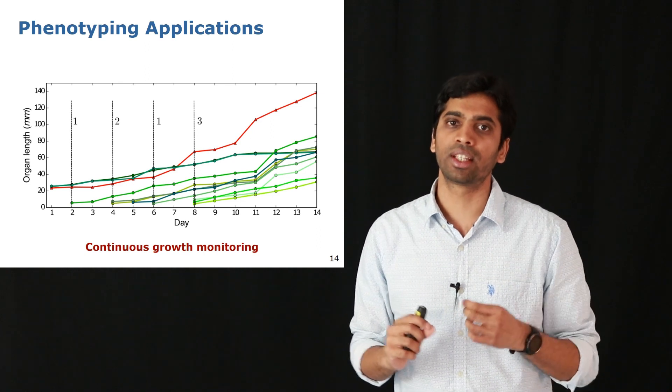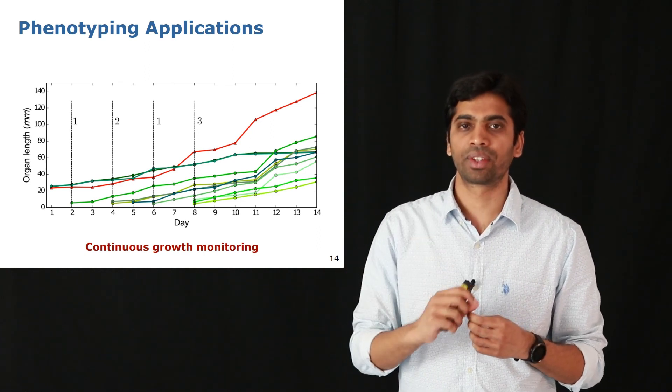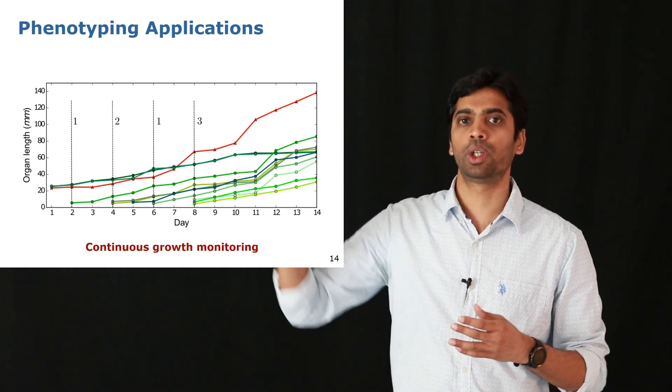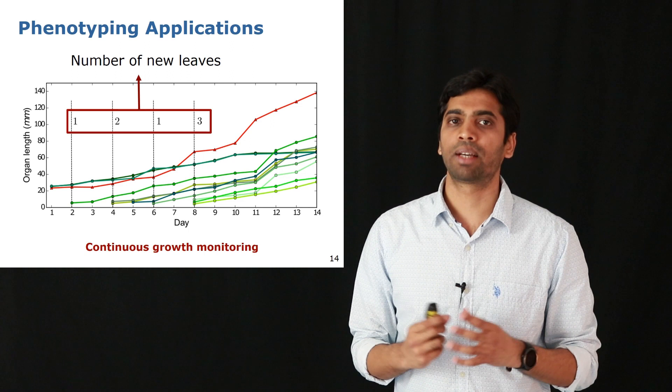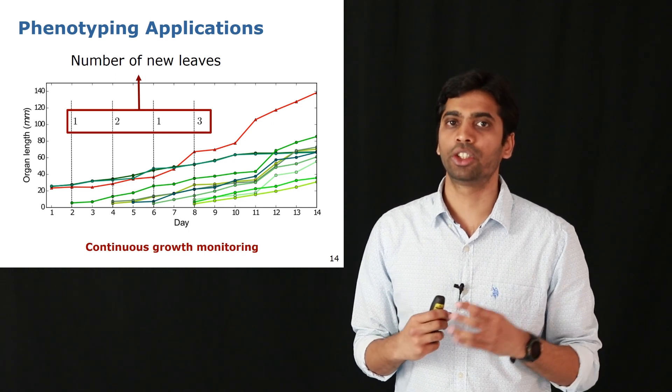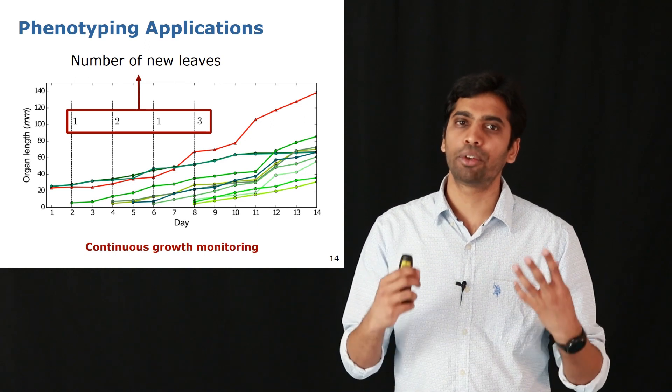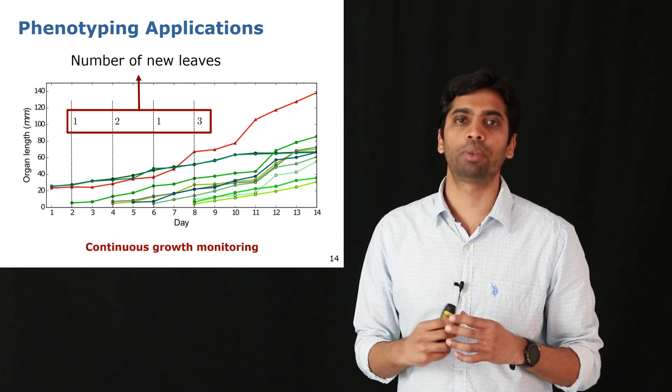The green lines represent the length of the leaves. Since we have the registration results, we're able to track them continuously over time. We are also able to detect interesting events such as the emergence of new leaves. The numbers in the box here are the number of new leaves that have emerged on those particular days.